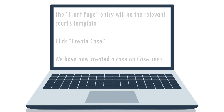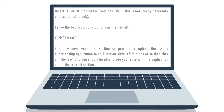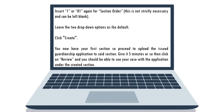The front page entry will be the relevant court's template. Click Create Case. We have now created a case on CaseLines. Next, we need to upload the application — the notice of motion and founding affidavit. To do so, we need to create a section, so click Create New Section. Under Section Number, insert 1 or 01. Your section title can be either 'Notice of Motion and Founding Affidavit' or 'Guardianship Application.' Insert 1 or 01 again for section order — this is not strictly necessary and can be left blank. Leave the two dropdown options as the default and click Create. You now have your first section, so proceed to upload the issued guardianship application to that section. Give it five minutes, then click on Review, and you should be able to see your case with the application under the created section.